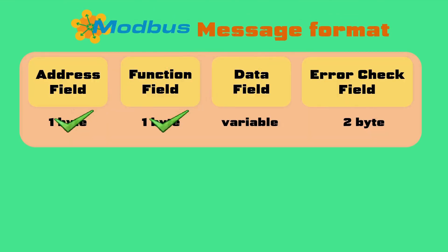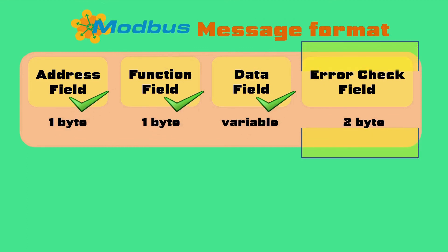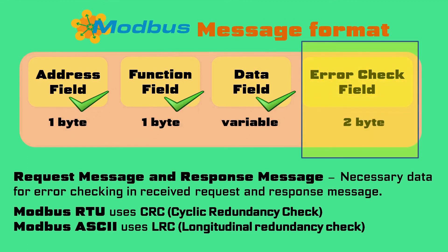The third field in a message frame is the data field, which may be of variable length. In the request frame, this field contains information that the targeted slave controller may need to complete the requested function. In the response frame, this field contains any data requested by the master. The last two bytes in a message frame comprise the error check field. Modbus RTU uses CRC while Modbus ASCII uses LRC for error checking.